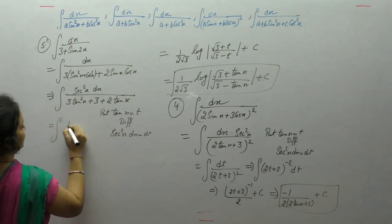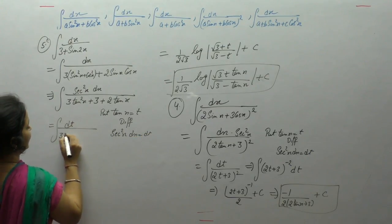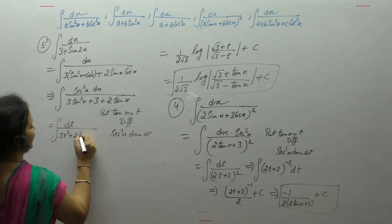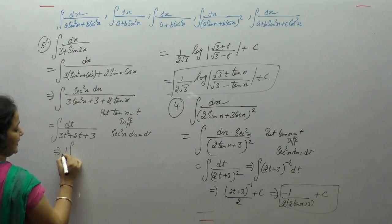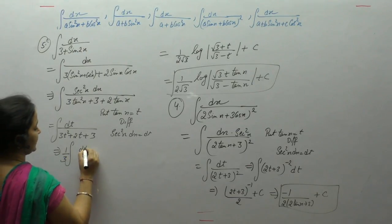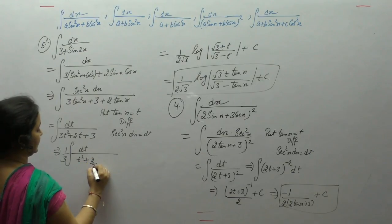dt upon 3t square plus 2t plus 3. Now in the denominator, complete the square, first make the coefficient of t square unity, by taking 3 common.